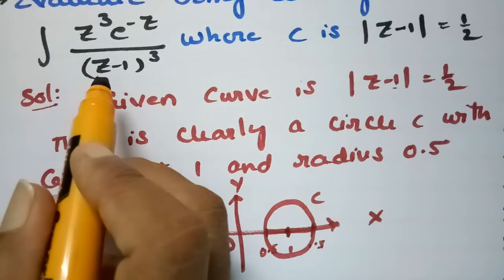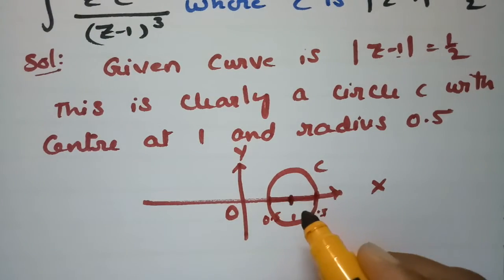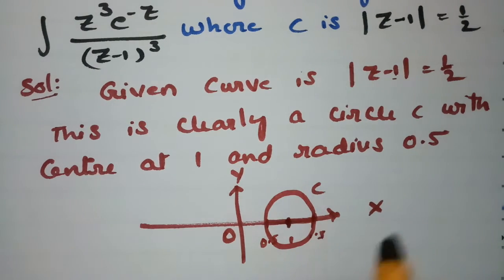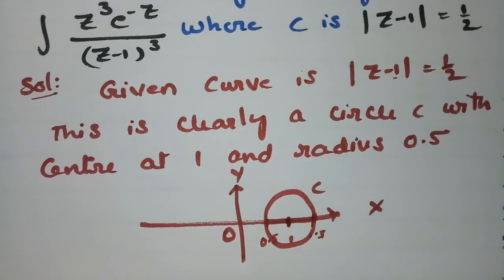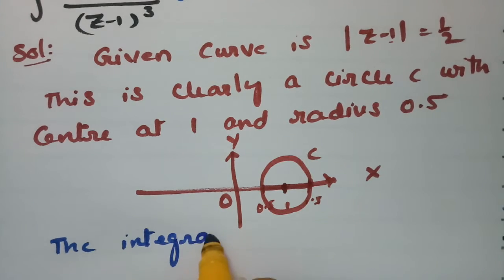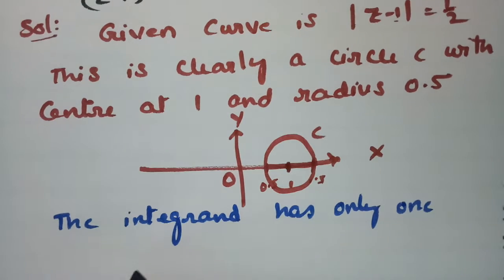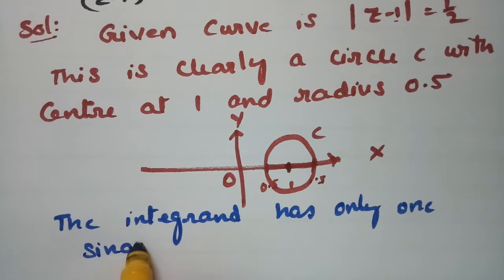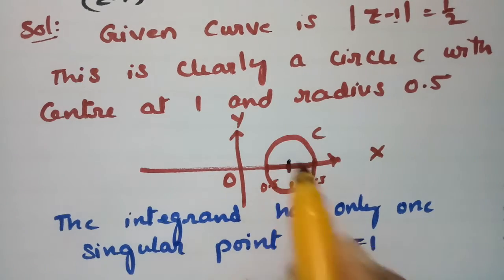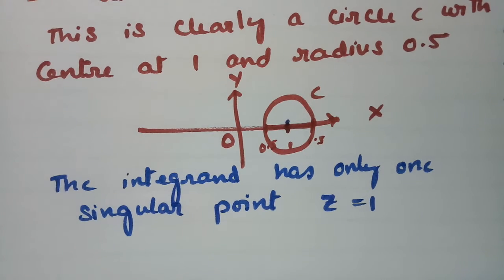If we observe this integrand, it has only one singular point: z equals 1. And z equals 1 is inside the circle c. Since it is inside the circle c, we can apply Cauchy's theorem. The integrand has singular point z equals 1, which is within the circle c. Therefore we can apply Cauchy's integral formula.